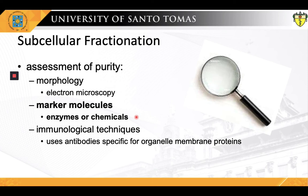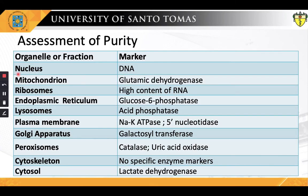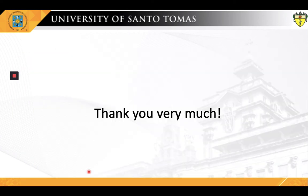The next slide will give us a list of the different marker molecules for certain organelles. Here is a tabulated summary of the different organelles and the respective important markers contained therein to assess the purity of the isolated organelles from the process of subcellular fractionation. Feel free to pause the presentation to read through each and every item. This concludes the Biochem Seria episode of the lecture on Introduction to Biochemistry and the Biochemistry of the Cell.